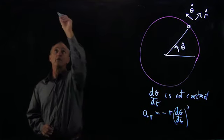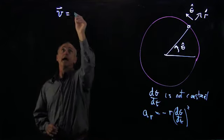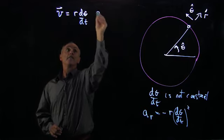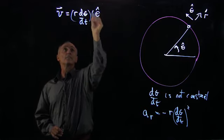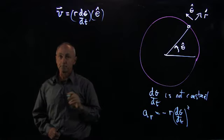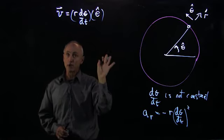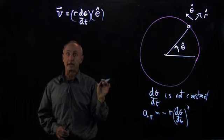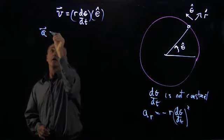So again, if we write our velocity vector as r dθ/dt theta hat, this is the product of two terms. And because it's a product of two terms, we need the product rule from calculus when we take a derivative.